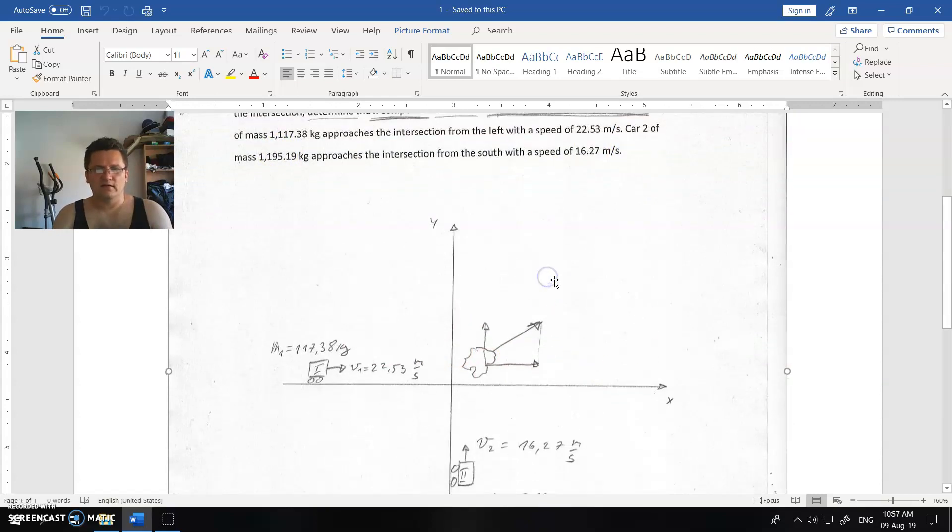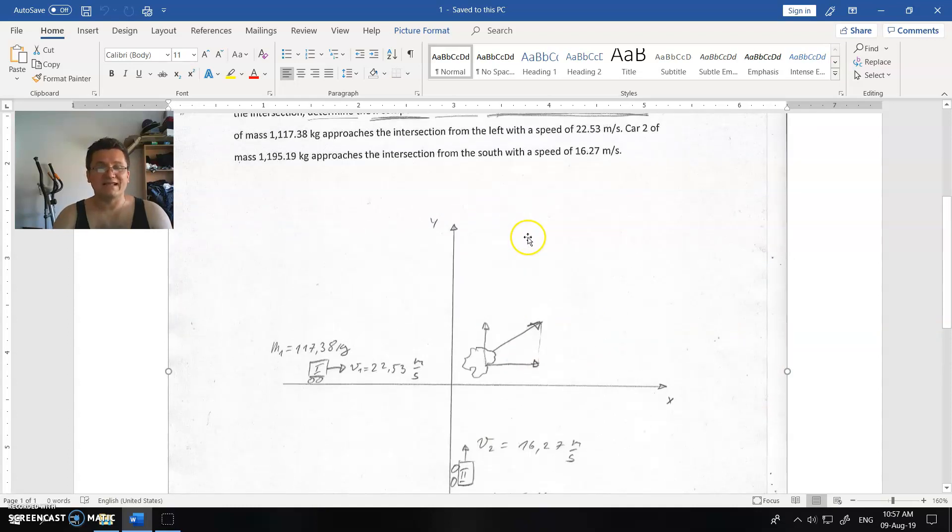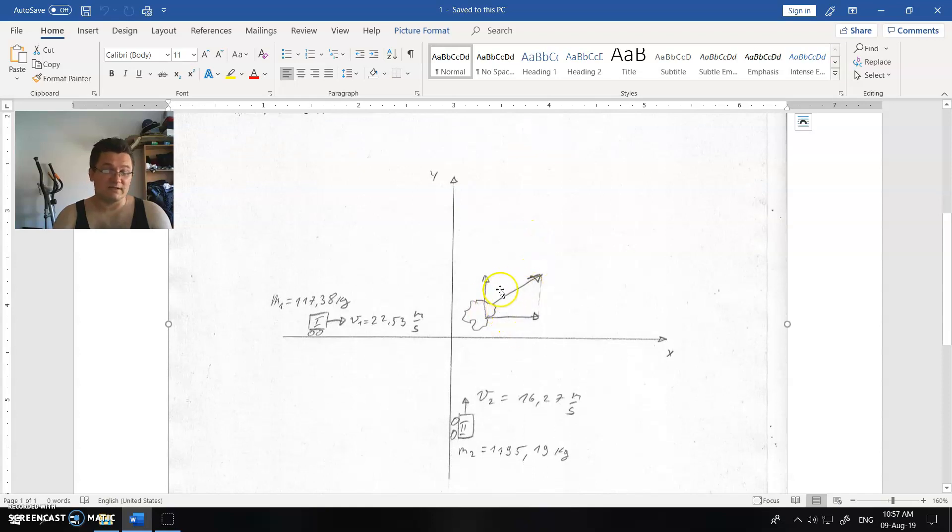What does it mean? You have one car that goes this way, another car that goes that way. What will happen when they collide? When they collide, they say it is inelastic, which means that they will continue together somewhere along this line.